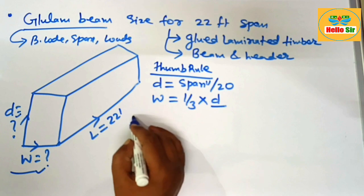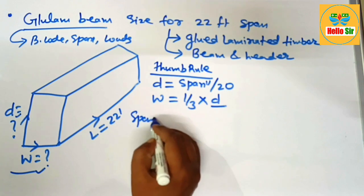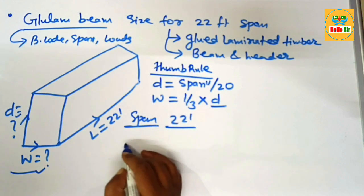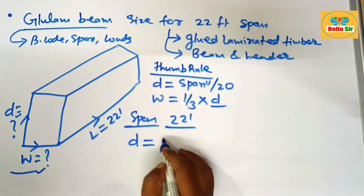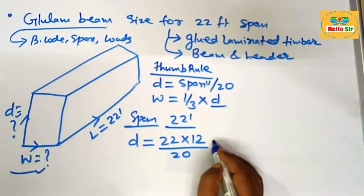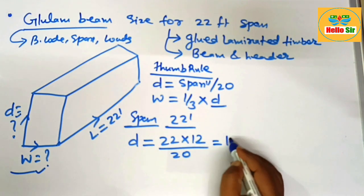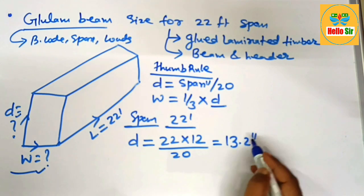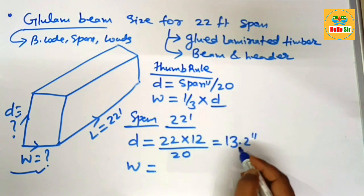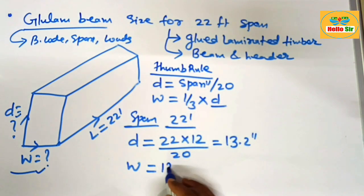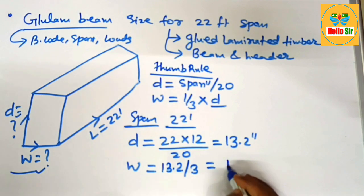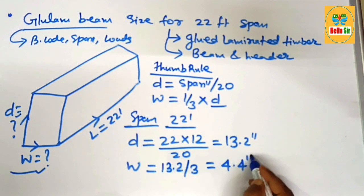Here the span length is about 22 foot. For this one the depth should be 22 multiply by 12 and divide this by 20. This will come about 13.2 inches. And width section of the beam is one third of depth, so 13.2 divided by 3. This will come about 4.4 inches.